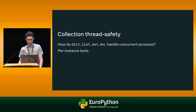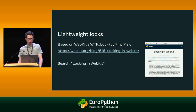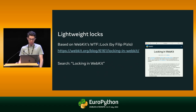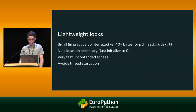Now I'd like to move on to collection thread safety — how things like dictionaries, lists, and sets handle concurrent accesses. Dictionaries are particularly important because they're widely used in Python, including for storing object attributes and global variables. Like many previous attempts at removing the GIL, the no-GIL project adds per-instance locks to collections like dictionary and list. The implementation is based on the locks used in WebKit, the browser engine for Safari, described by Phil Pizlo in a blog post called 'Locking in WebKit' — if you're interested in how locks work, I highly recommend it.